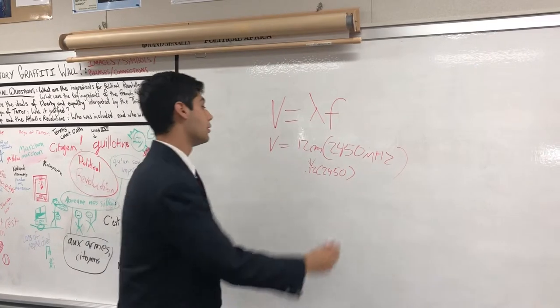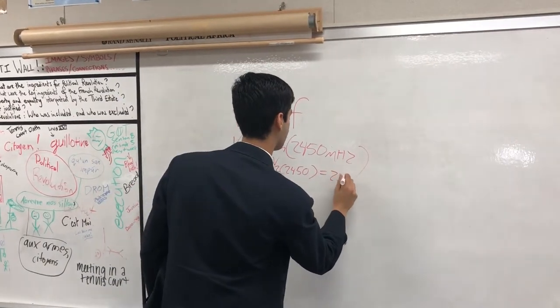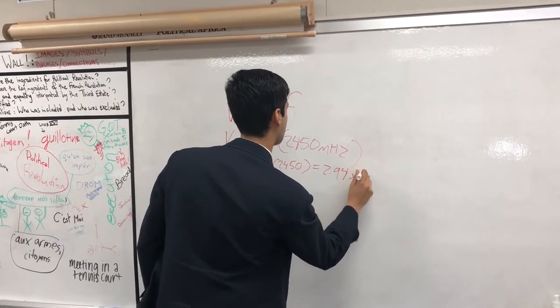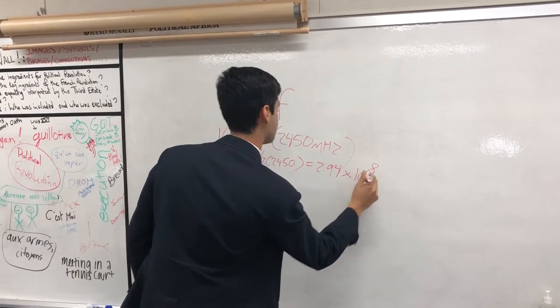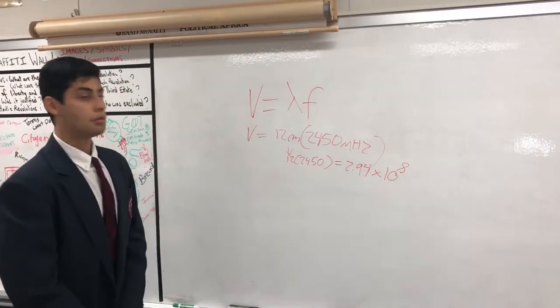And this gives you 2.94 times 10 to the 8th power, which is near the speed of light.